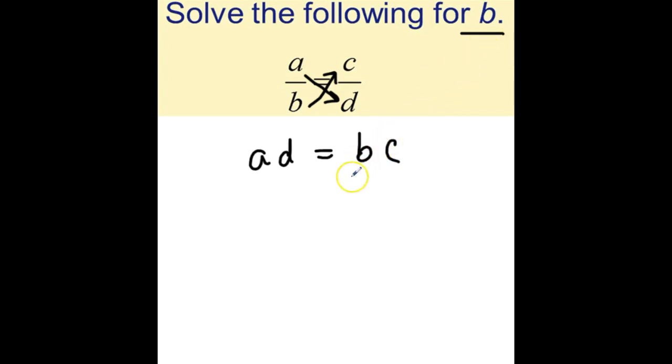Our goal is to get B by itself, so if we divide the right side by C, we'll have B by itself. But since we divided the right side by C, we also have to divide the left side by C, which gives us AD over C equals B.